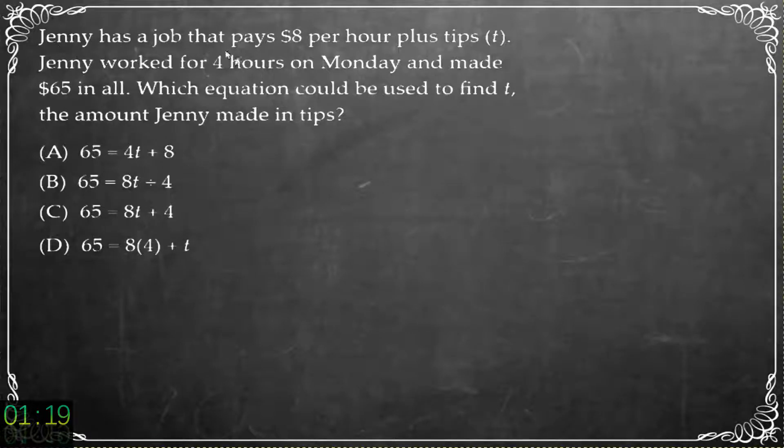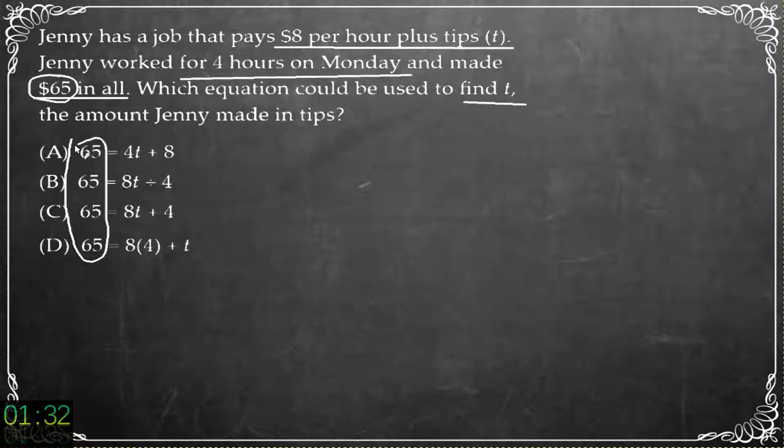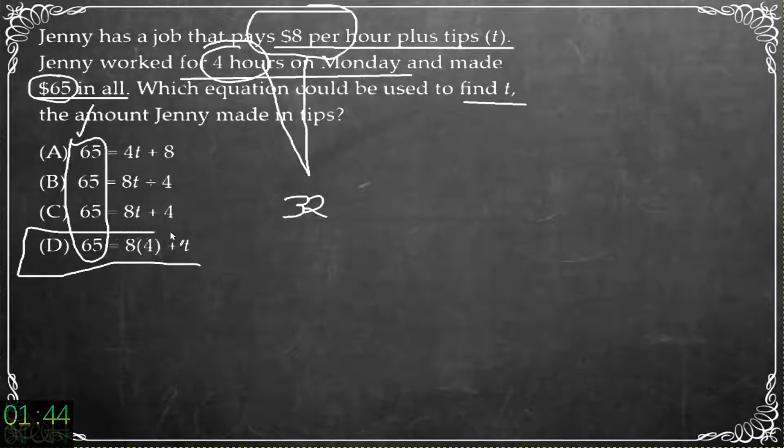Jenny has a job that pays $8 per hour plus tips. Jenny worked for four hours on Monday and made $65 in all. Which equation can be used to find T, the amount Jenny made in tips? All right well they're all set equal to 65 so that part's correct. But the only one that looks like it's the $8 per hour for four hours which is of course 32 looks like it's going to be answer D. So choice D should be the one to find tips.